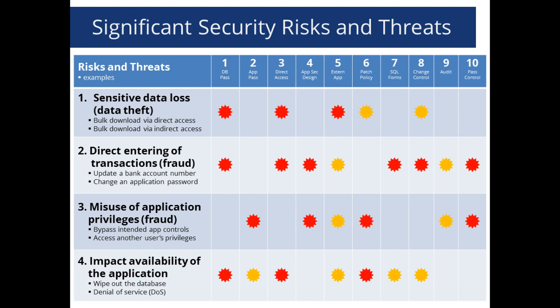One of the big risks is sensitive data loss — anything from credit card numbers to social security numbers. If you're running an HR system, you may have social security numbers, home addresses, date of birth, full name. That's worth about $50 per person on the street. If someone gets in and steals 10,000 identities, they can sell those for about $50 each, so you can put a dollar amount on sensitive data.